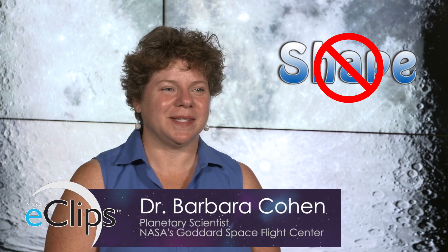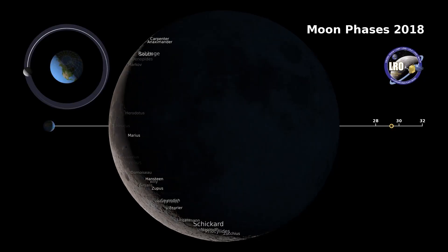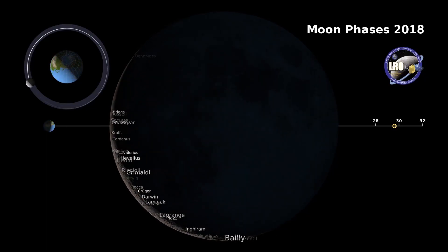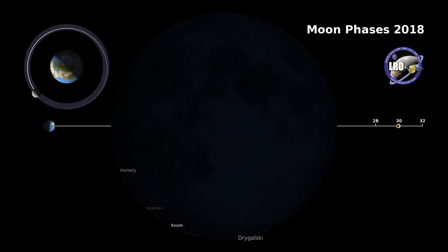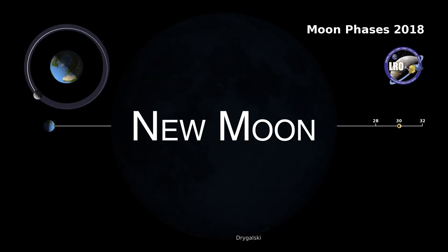But why does the moon change shape every night? The moon doesn't change shape — what we see is the moon being lit with different amounts every night, so it appears to change shape. We call these the phases. When the moon is new, there's no sunlight reflecting off of it back towards us, so we can't see it.